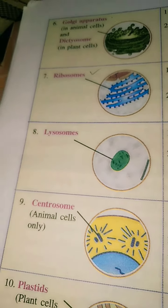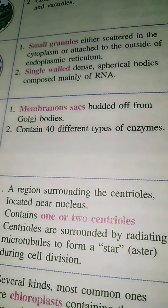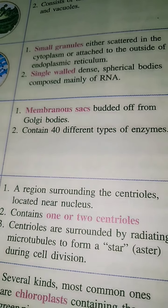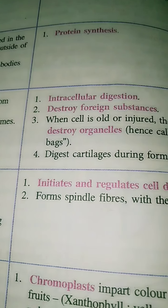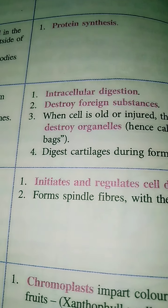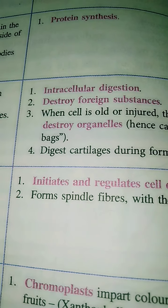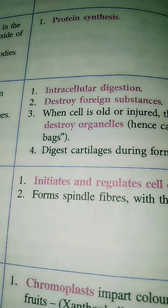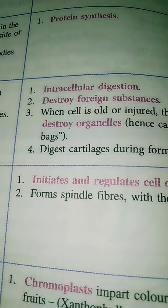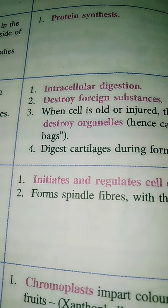Now we move to another cell organelle known as lysosome. Lysosome is a cell organelle present only in animal cells, and it contains 40 different types of enzymes. Lysosome is a small saccular structure, and its main function is intracellular digestion. Especially if any foreign bodies or unwanted structures enter into the cell, the lysosome secretes digestive juices and destroys them. Sometimes the lysosome bursts and the entire cell becomes destroyed — that is why the lysosome is also known as the suicidal bag inside the cell.